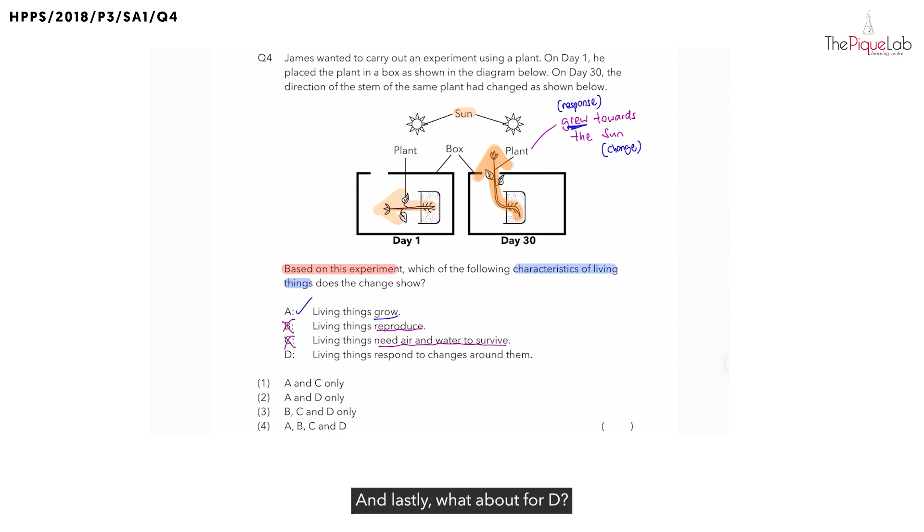And lastly, what about for D? They said living things respond to the changes around them. Is this shown in the experiment above? Yes. That's what we said earlier. We can see that when the sun was there, the plant started to grow towards the sun. So this shows us that living things respond to changes around them. Which means, what's the correct answer? The correct answer has to be A and D only, which is option 2.